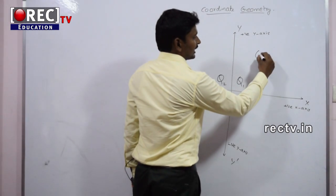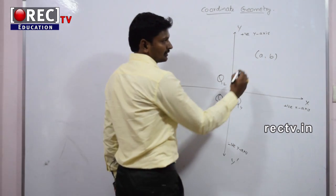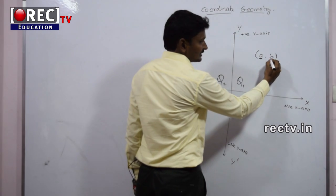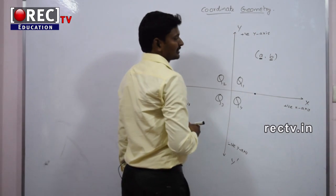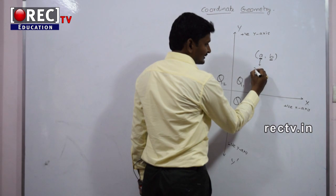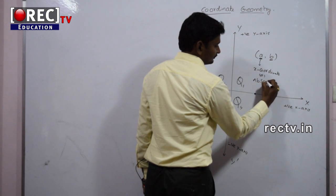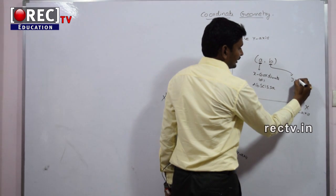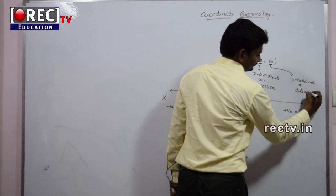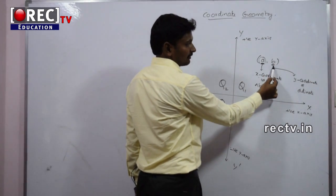The ordered pair (A, B) represents any point on the coordinate axis. The first element represents the position with respect to the X axis, and the second element represents the position with respect to the Y axis. So A is called the X coordinate, or abscissa. The second one, B, is called the Y coordinate, or ordinate.